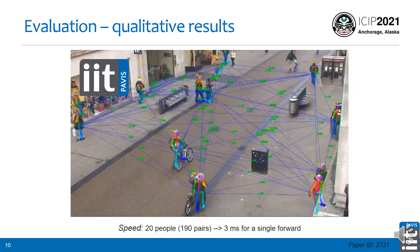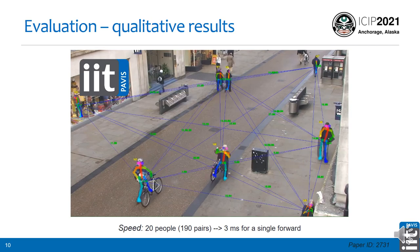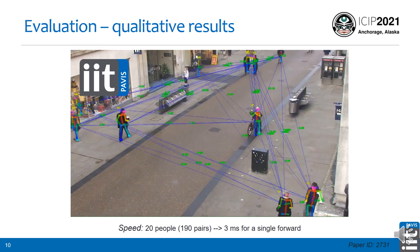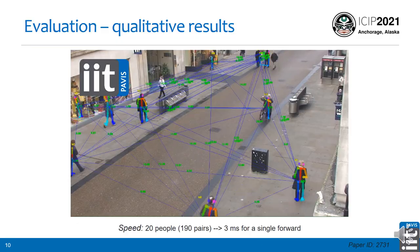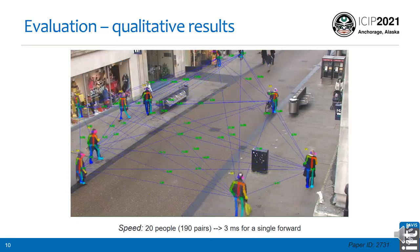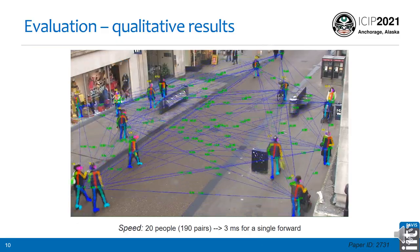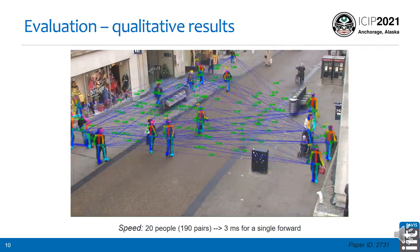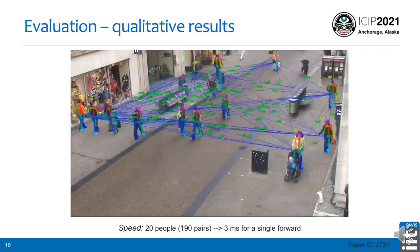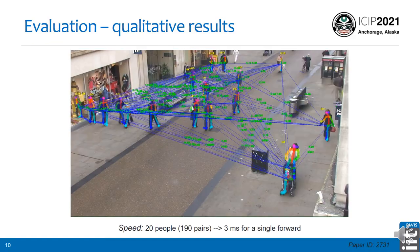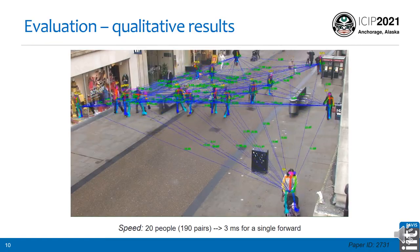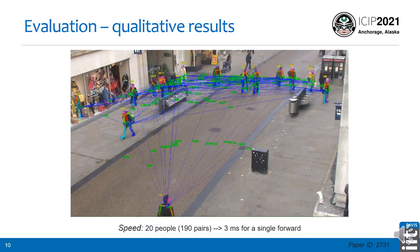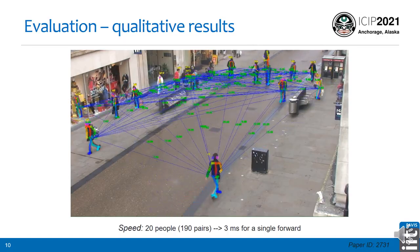Here are some qualitative results. As you can see in the video, we are estimating the distances between each pair of people. The algorithm is quite light and fast: for 20 people in the scene, which means 190 pairs, we only need 3 milliseconds for a single forward pass of the network to predict all distances in the scene.